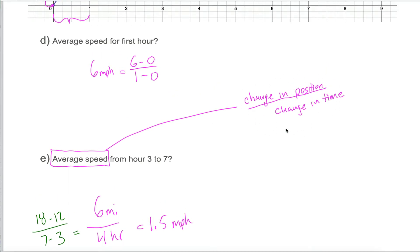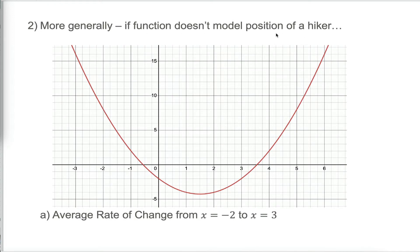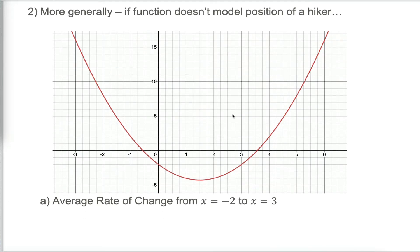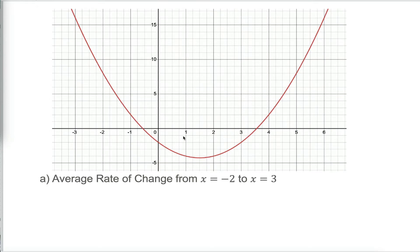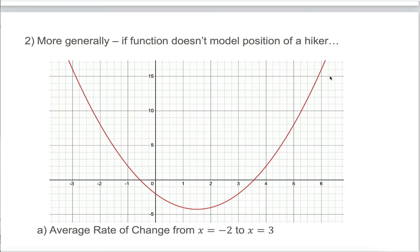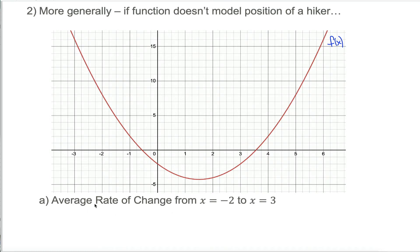In this video, we're going to generalize that a little bit. Sometimes we want to know not about average speed but about the average change in a function — because maybe our function isn't modeling a hiker's position but something else entirely. We're going to do the exact same thing and just call it the average rate of change. For example, say I give you this function f of x. What does it model? It doesn't matter. Suppose somebody asks you to calculate the average rate of change from x equals negative two to x equals three.